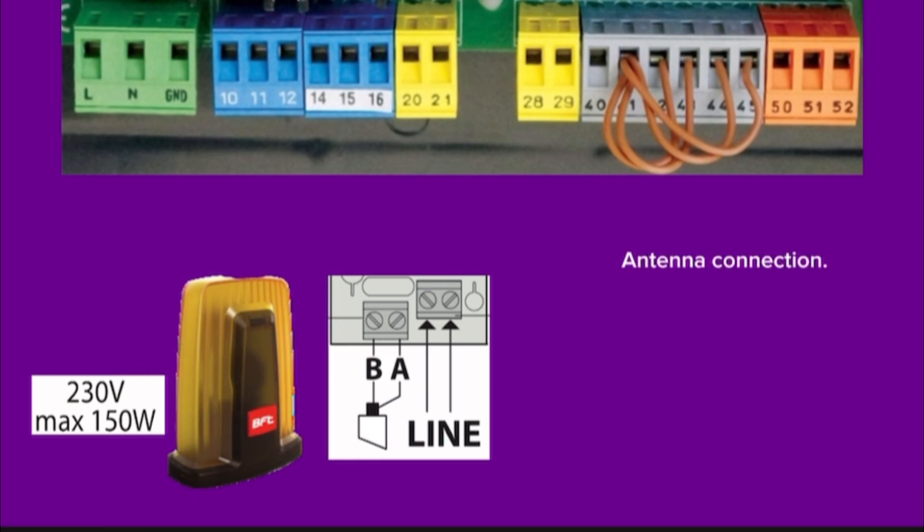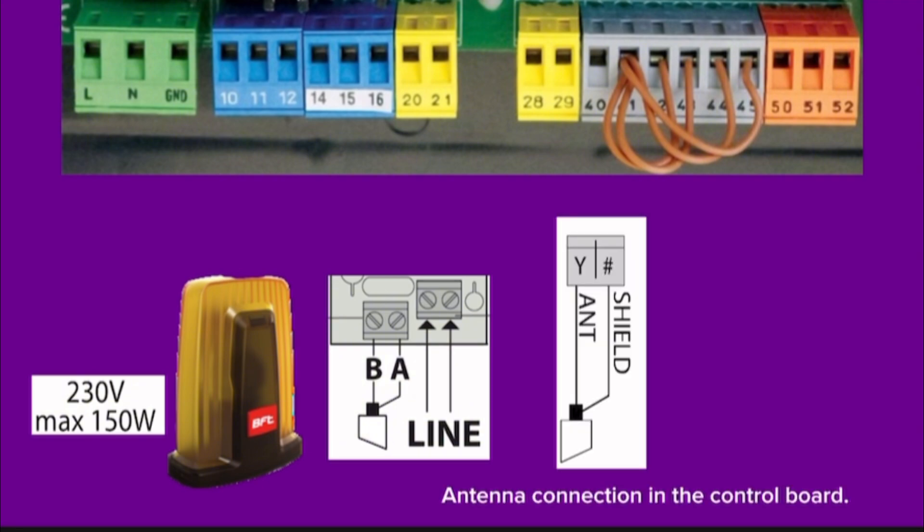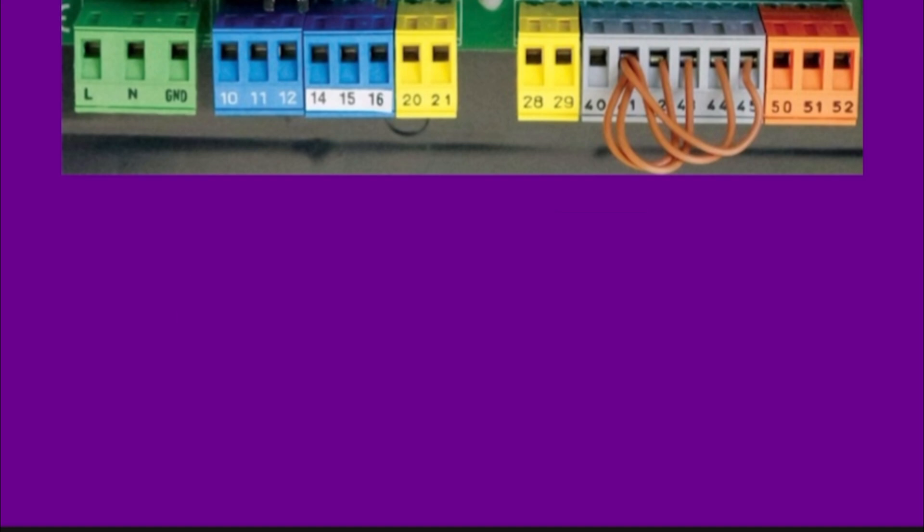Antenna connection in the control board. Use an antenna tuned to 433 MHz. Use RG58 coax cable to connect. Pin 28 and pin 29.